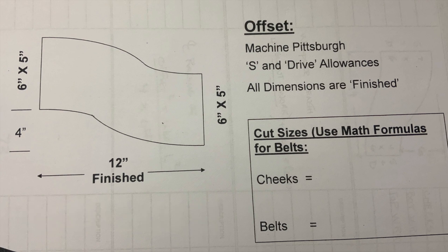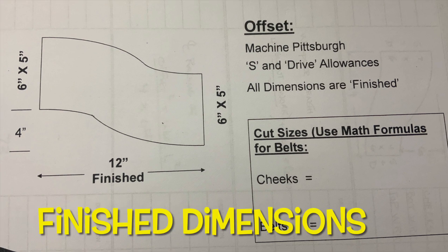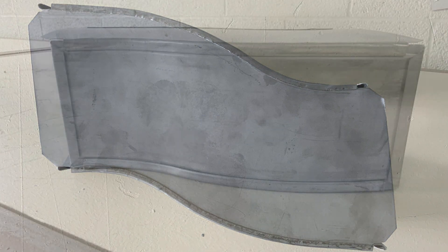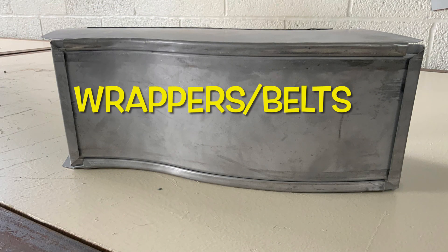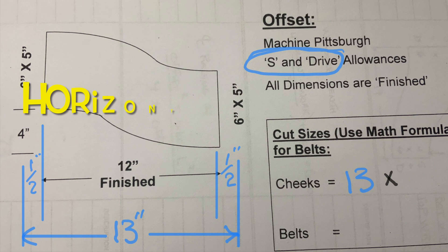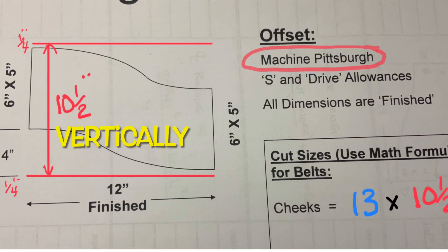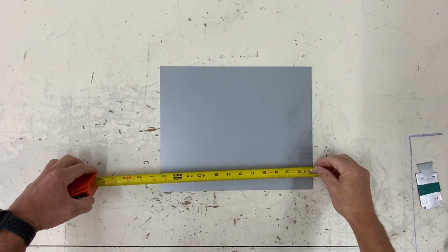This shop ticket of the offset has all finished dimensions. This offset has two cheeks and two wrappers, and we need to find the cut sizes. We're going to start with the cut size for the cheeks. Here you can see I need 13 horizontally and vertically 10 and a half. So I need a piece of metal 13 by 10 and a half.